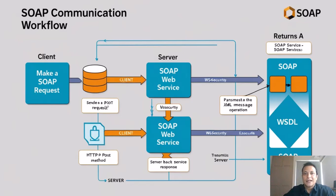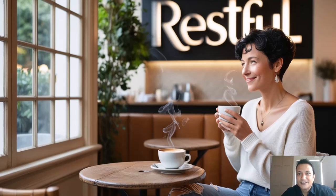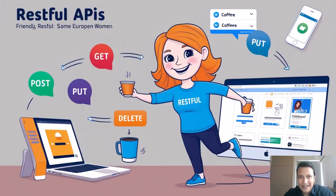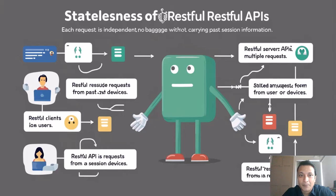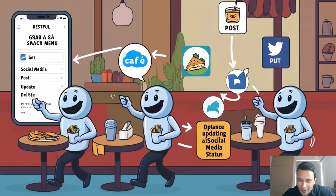Let's move to the next one, which is RESTful — the everyday conversationalist. RESTful loves simplicity and efficiency. She speaks the language of HTTP, using common methods like GET, POST, PUT, and DELETE. RESTful is all about making things easy, whether it's grabbing a quick snack from the cafe or updating a social media status. She's stateless, meaning she does not carry any baggage from past conversations, making her super lightweight and fast.